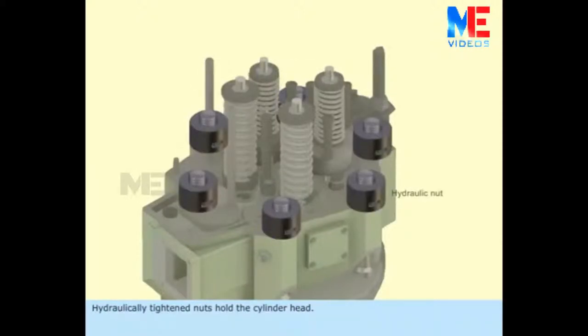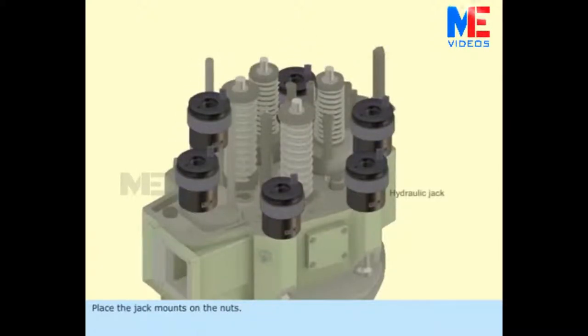Hydraulically tightened nuts hold the cylinder head. Place the jack mounts on the nuts. Tighten the jacks on the stud fully and open half turn.